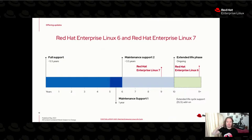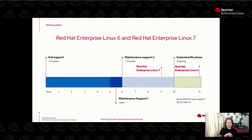RHEL 6 is right at the end of its time frame — it's been around for over 11 years and will no longer be offered as an ELS add-on. Then RHEL 7 will be moving into that ELS phase. So if you're running any RHEL 7 systems after June 30th of next year — 395 days from today — you will need that ELS add-on to continue running in a supported fashion.